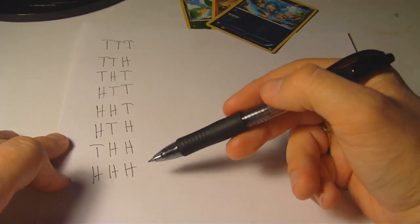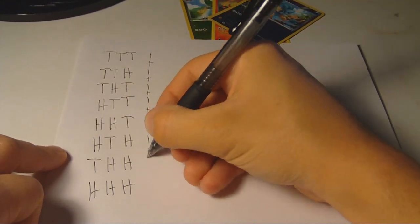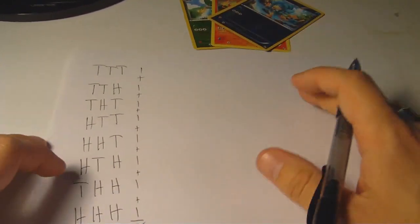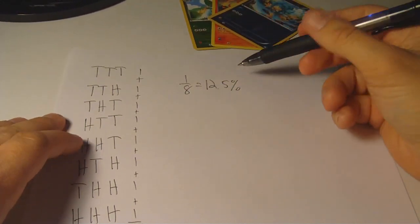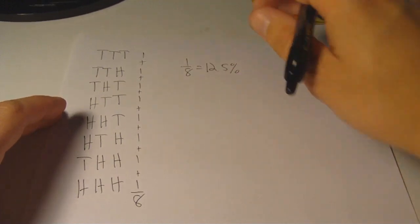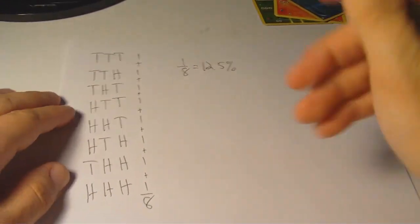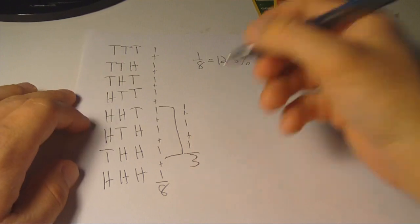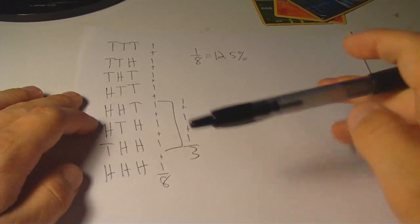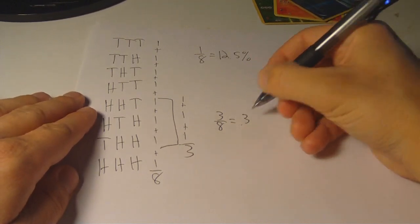This gives us 8 total possibilities, thus a 1 in 8, or 12.5% chance of getting each result. Now, let's say we wanted to find the probability of flipping only 2 heads — that would be 2 heads and 1 tails. We add up the number of results; in this case we have 3 of them. And divide that by the total number of results, which is still 8. So we have 3 eighths, which is about 37.5% — the chance of flipping exactly 2 heads.